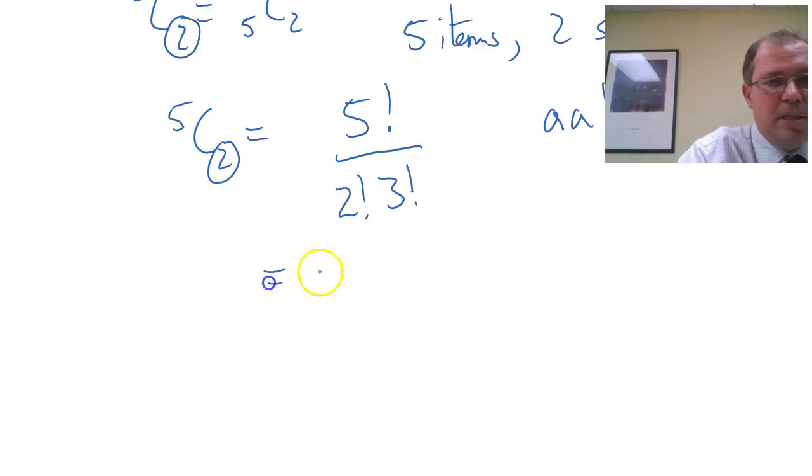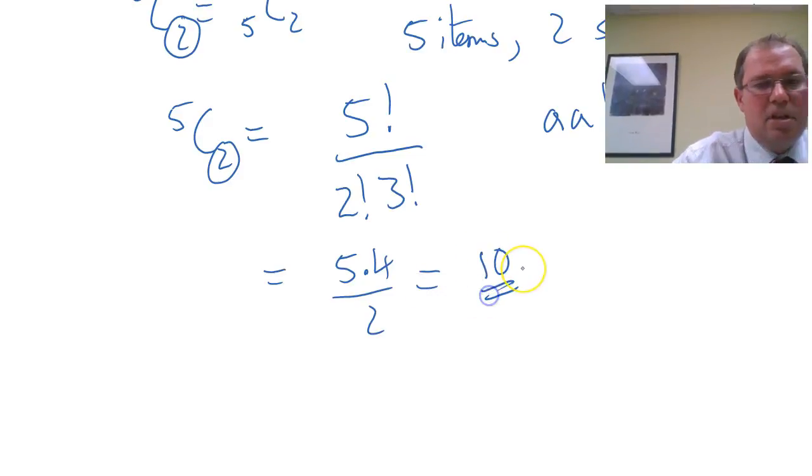And we get the answer for 5 choose 2, which is 5 factorial over 2 factorial, 3 factorial, which we can simplify to 5 times 4 over 2, which is 5 times 2, which is 10, giving us the correct answer.